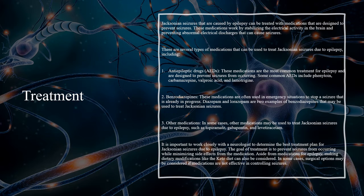Jacksonian seizures caused by epilepsy can be treated with medications designed to prevent seizures. These medications work by stabilizing the electrical activity in the brain and preventing abnormal electrical discharges. There are several types of medications that can be used, including anti-epileptic drugs, which are the most common treatment for epilepsy. Some common anti-epileptic drugs include phenytoin, carbamazepine, valproic acid, and lamotrigine.